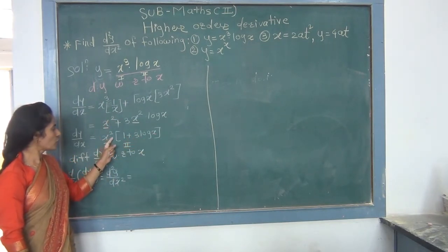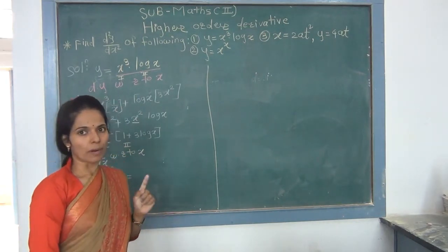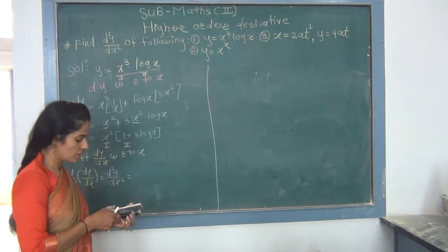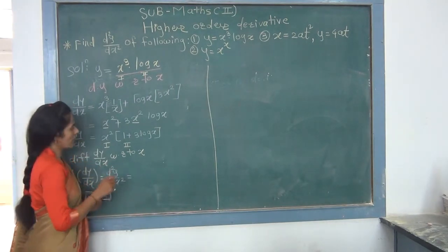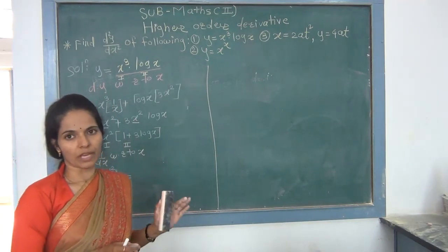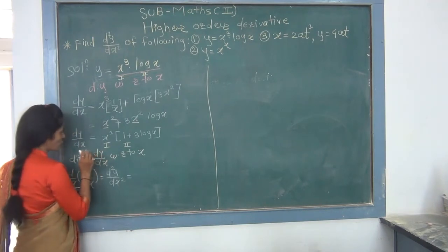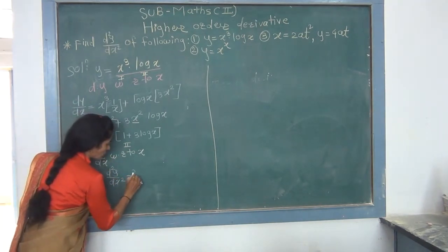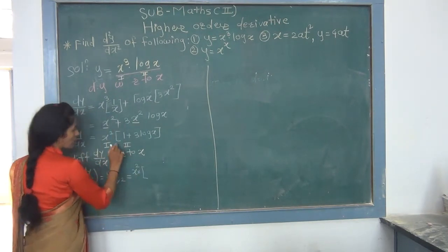Let us start with the second example. If y = x^x, find its second order derivative. Since x^x is neither a standard nor a composite function — it is a function raised to a function — we must differentiate it using logarithmic differentiation, by taking log on both sides.